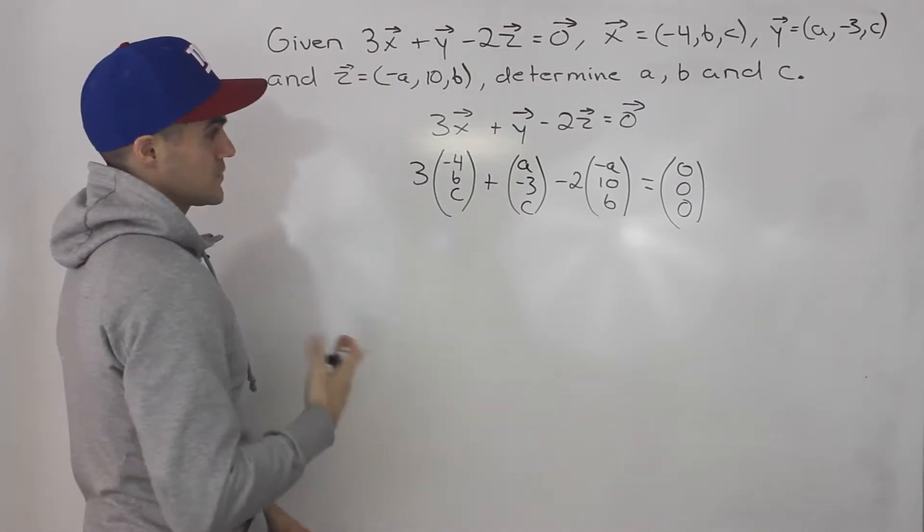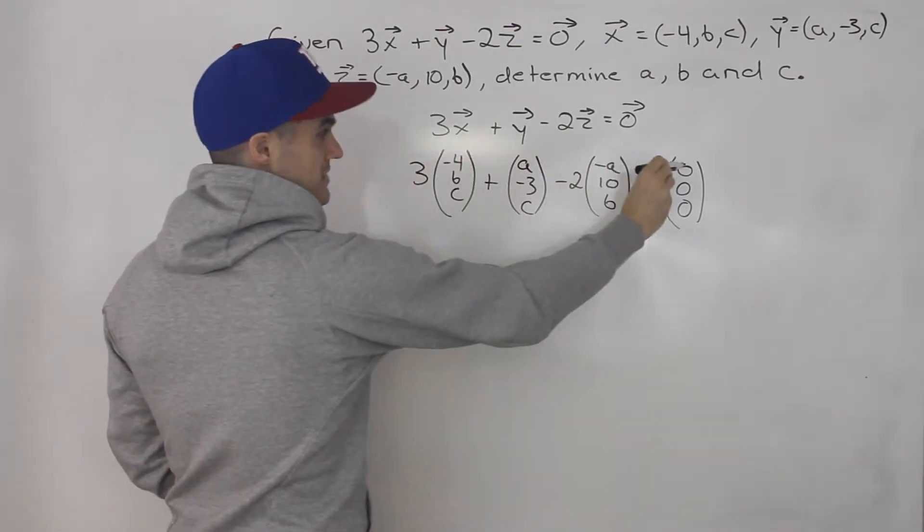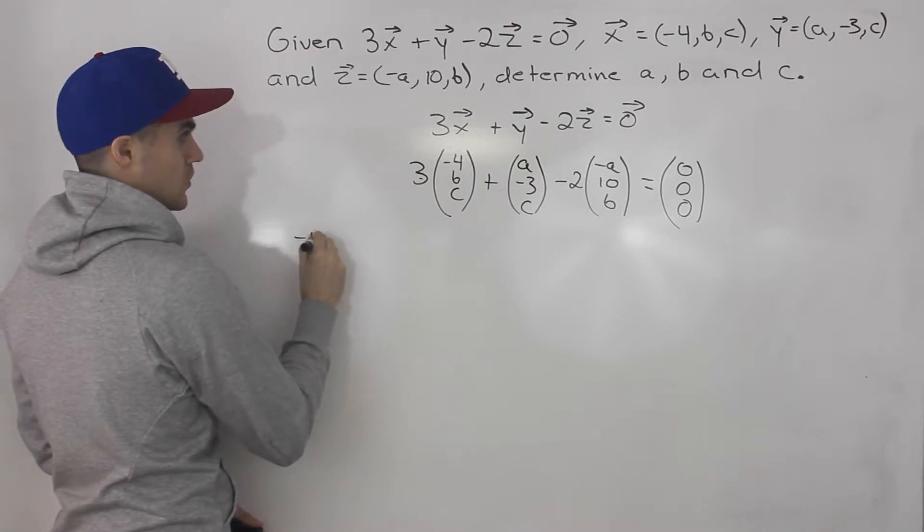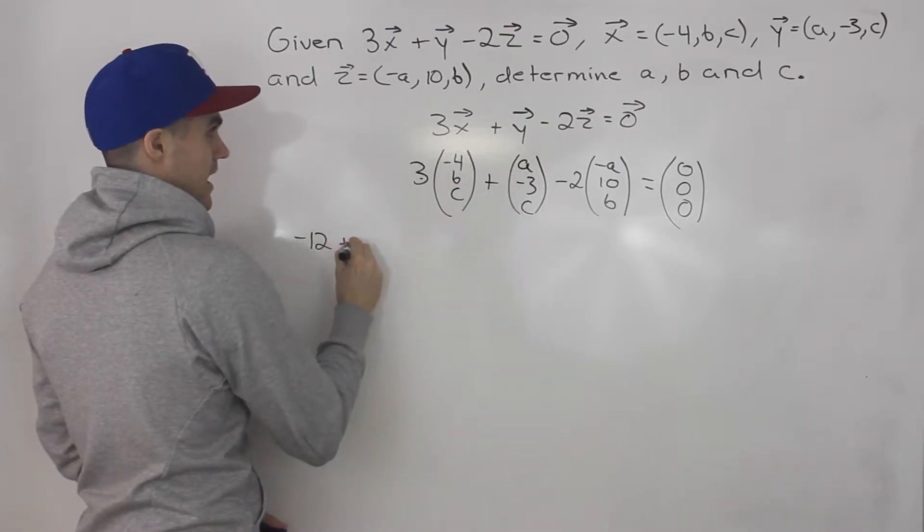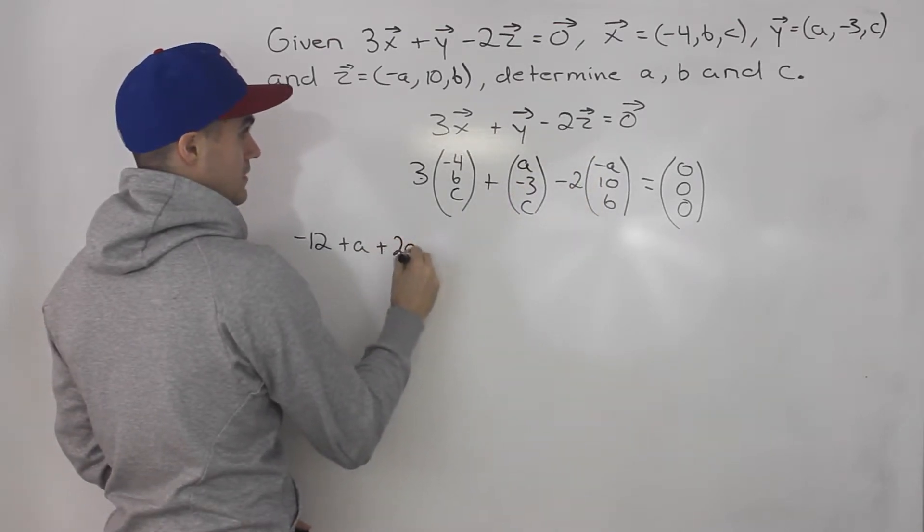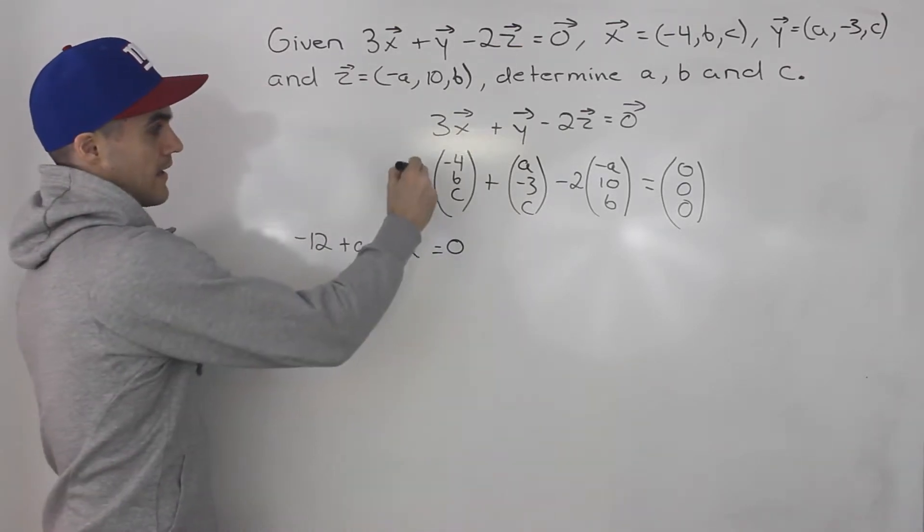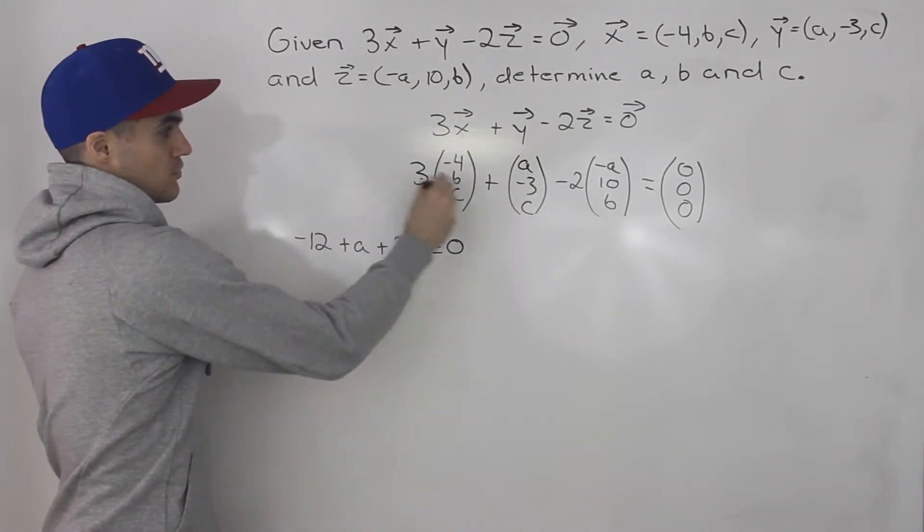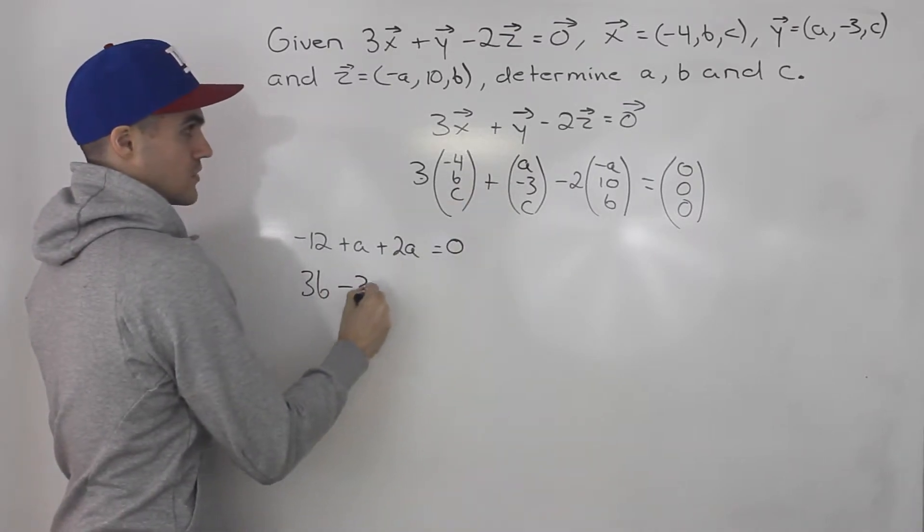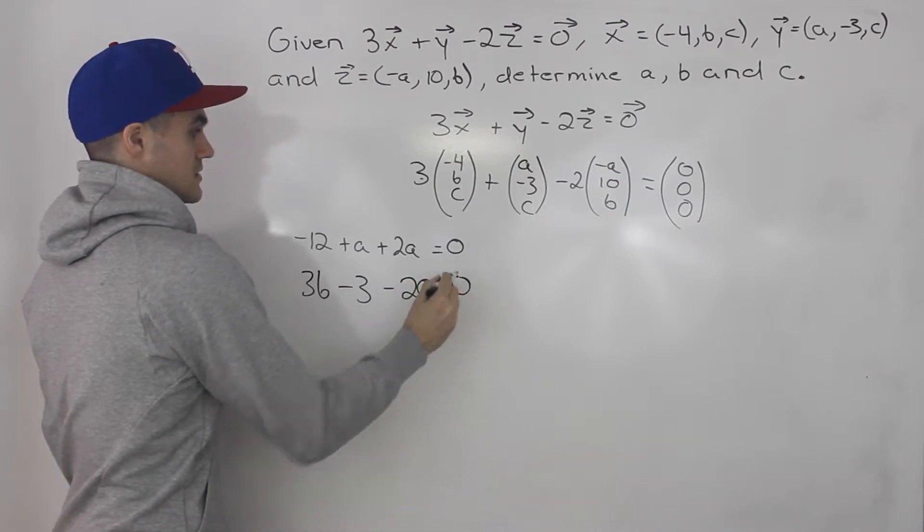And now notice we can create equations here. We can create an equation for all the x values. So basically 3 times -4, that is -12, plus a, -2 times -a is 2a, equals 0. And then we can create an equation for all the y values. So 3 times b is 3b, plus -3 minus 20 equals 0.